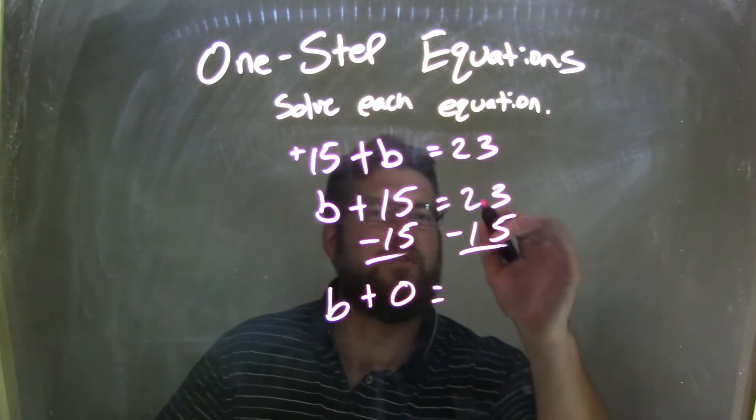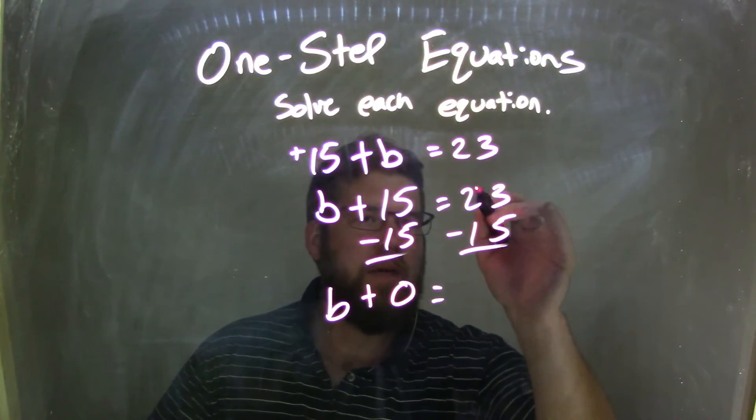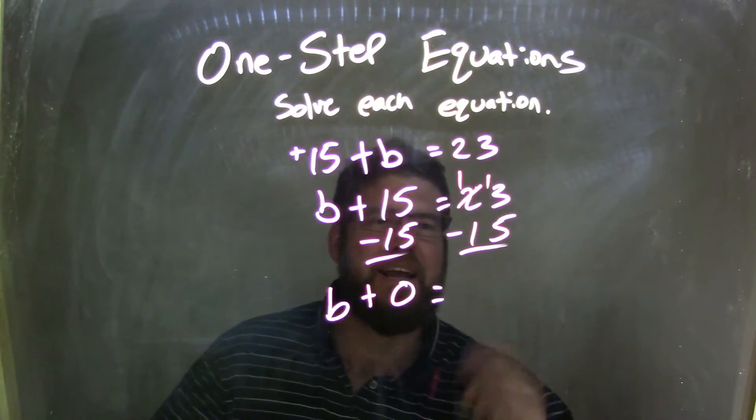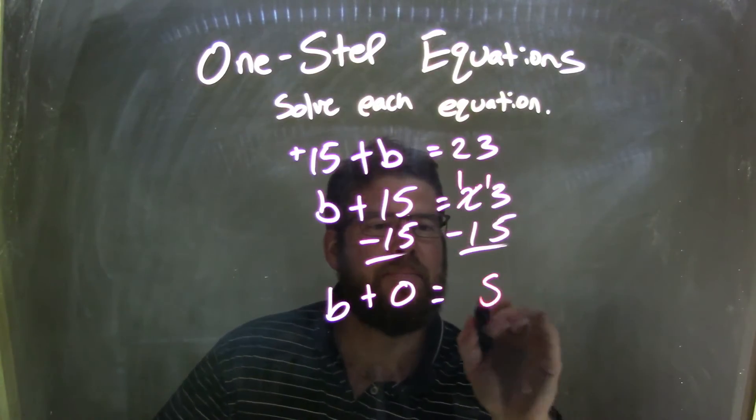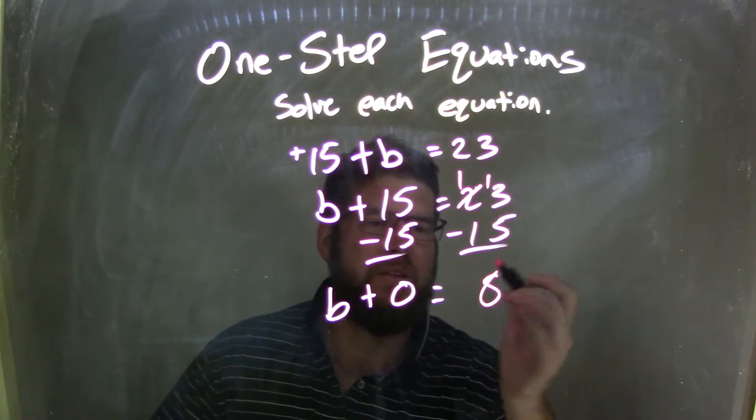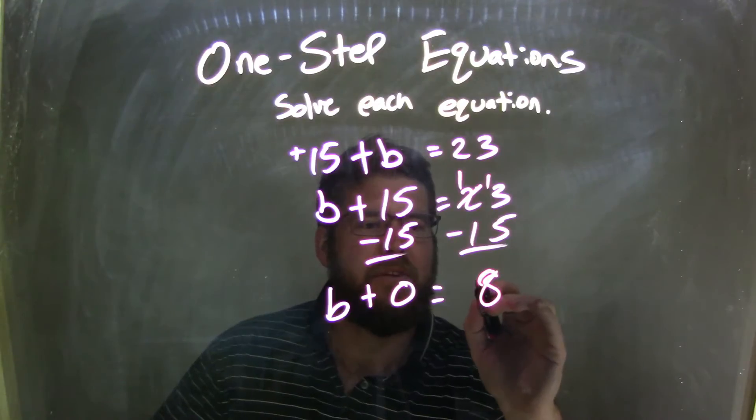Let's use the traditional method. 3 minus 5, can't do that, so 2 becomes a 1, and 13. Now I'm left with 13 minus 5. 13 minus 5 comes out to be an 8, and 1 minus 1 is 0, so now we're left with a final answer of 8.